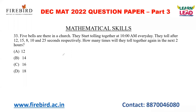5 bells are there in a church. They start tolling together at 10 a.m. every day. If they ask you questions like 5 bells or 5 lights, you have to take the LCM. So what is the LCM for 12, 15, 8, 10, and 25? You can do it by the normal method.